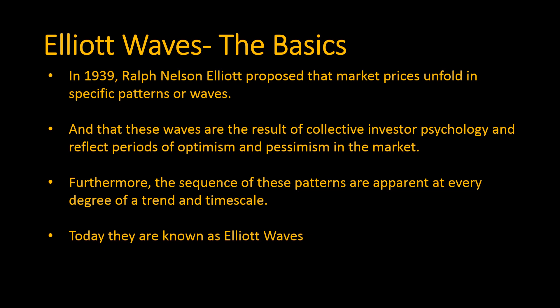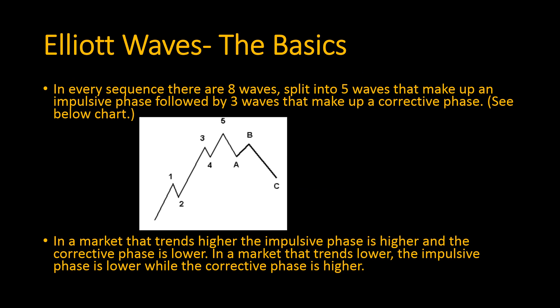Furthermore, the sequence of these patterns is apparent at every degree of a trend and timescale. Today they are known as Elliott Waves. In every sequence there are eight waves, split into five waves that make up an impulsive phase, followed by three waves that make up a corrective phase. In a market that trends higher, the impulsive phase is higher and the corrective phase is lower.